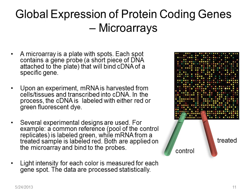In this example, there are two cDNA preps: one from control cells and one from cells treated in some way. They are labeled so that the bound control cDNAs emit green light and the treated sample DNAs emit red light. Light intensity and color is measured for each spot.